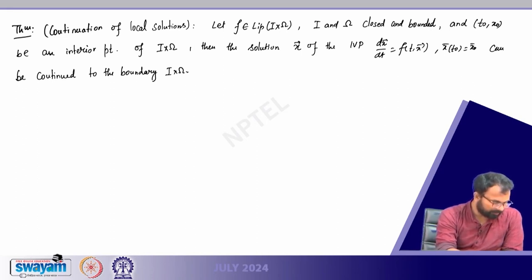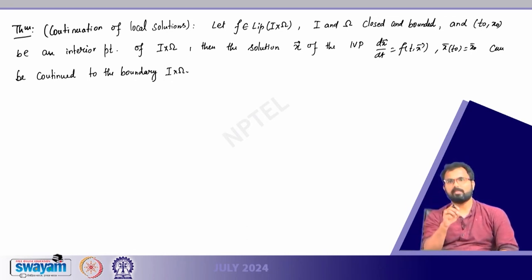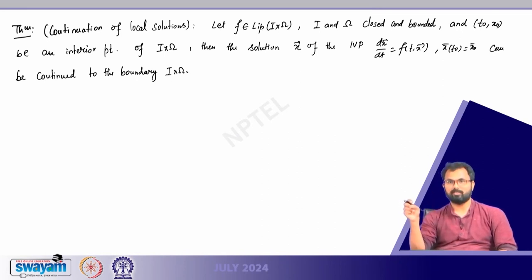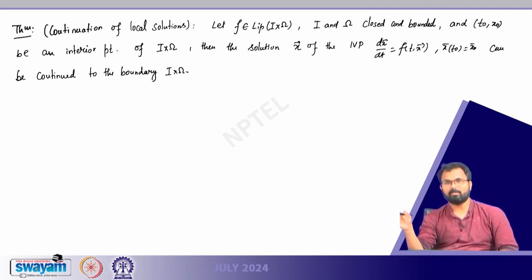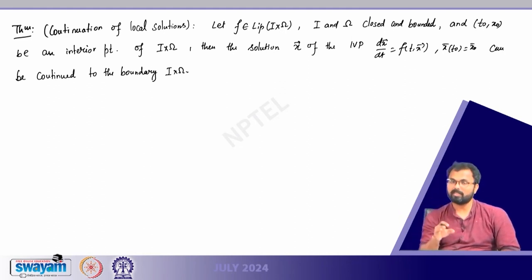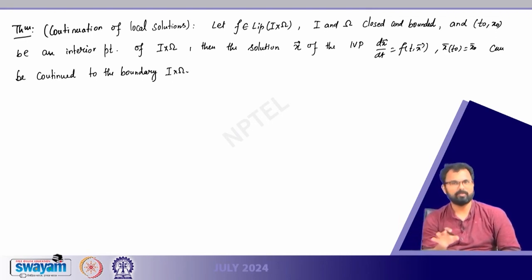We skip the detailed proof — it is very simple. You first show the solution exists on (t0 minus alpha, t0 plus alpha). At the endpoint t0 plus alpha, you define a new initial condition, and since f is Lipschitz continuous you obtain a new interval I1 = (t1 minus alpha, t1 plus alpha). You keep defining new initial conditions at each boundary point. As long as Lipschitz continuity holds you get local existence, and continuing this bootstrapping argument you finally reach the boundary.